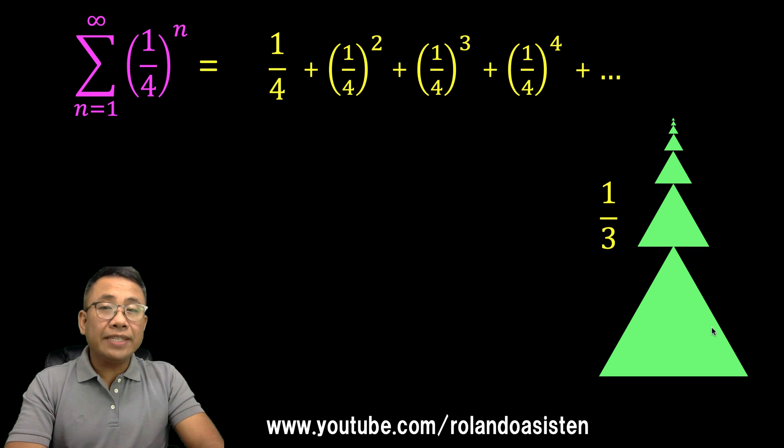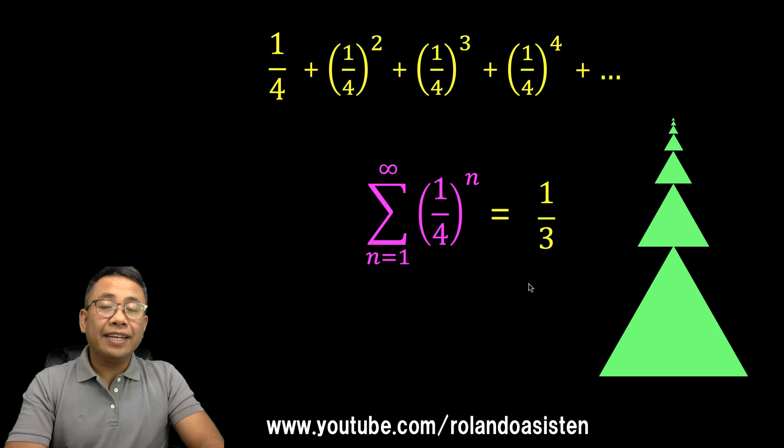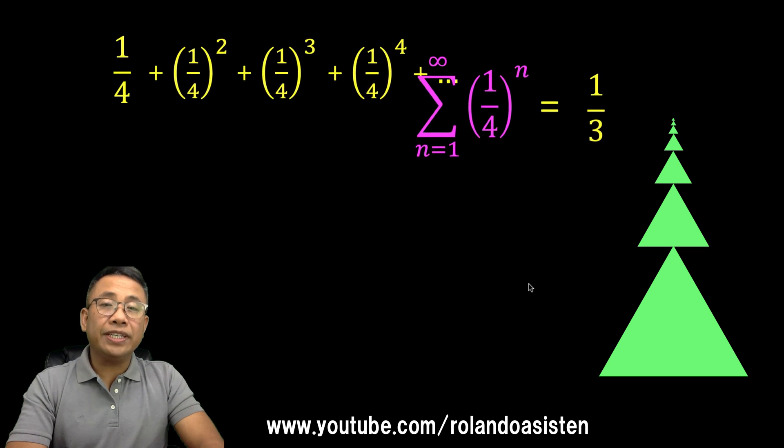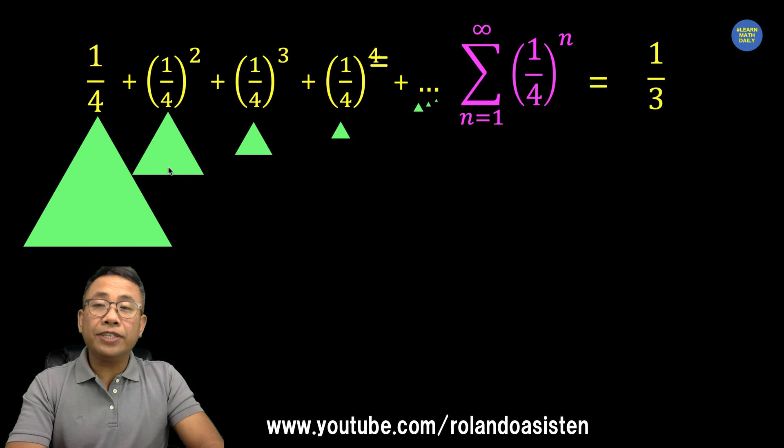This is the visualization of this series. And so we now say that the value of the series is 1/3 and that is now visualized this way. This is the 1/4. This is (1/4)². (1/4)³. (1/4)⁴ until infinity. And so the answer is 1/3.